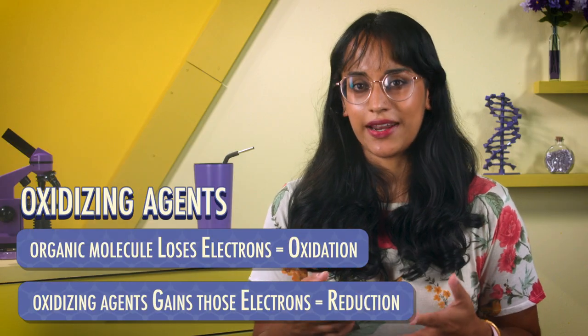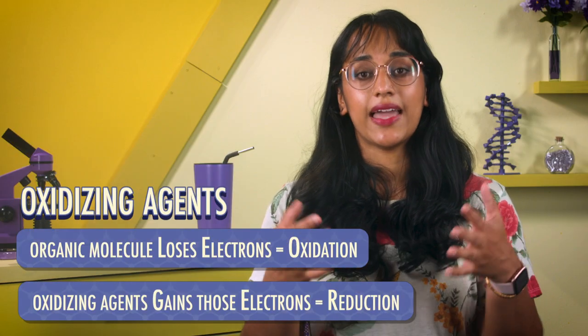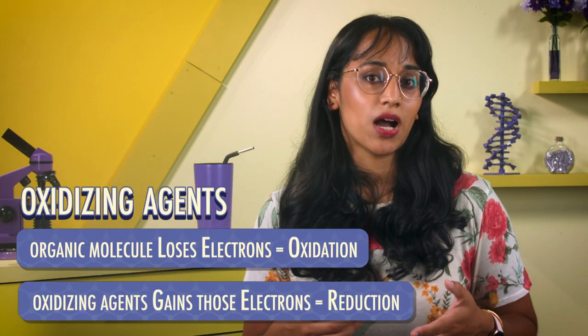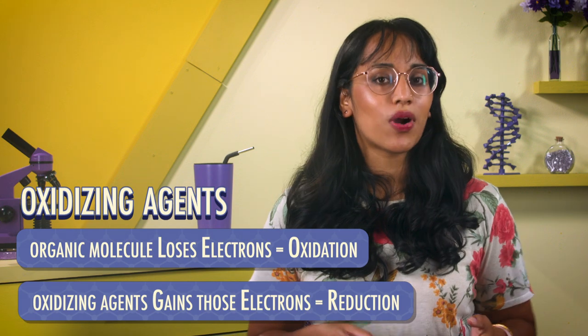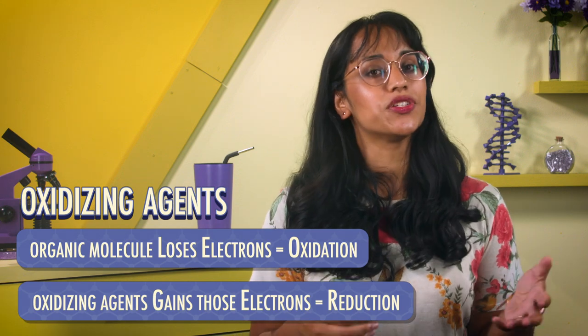Oxidizing agents are molecules that oxidize organic compounds. They accept electrons from the organic compound, and in the process, the reagents are reduced. Oxidizing agents are usually the culprits behind multiple carbon-oxygen bonds forming from an alkene. We'll see two types of oxidizing agents in this episode — ones with oxygen-oxygen bonds, and ones with metal-oxygen bonds.